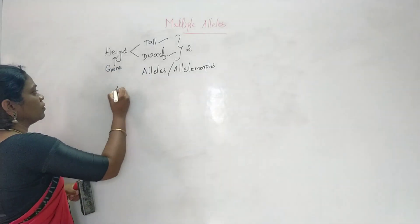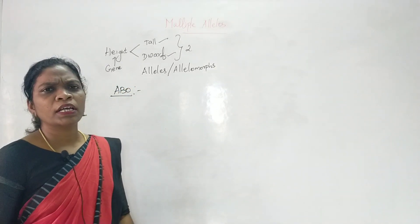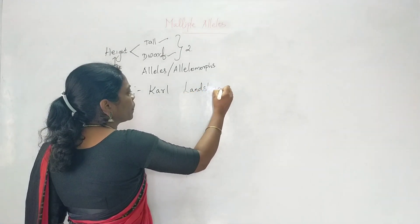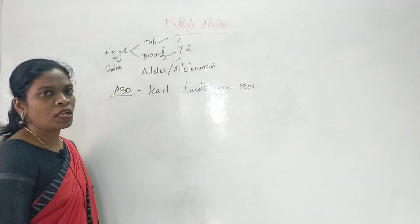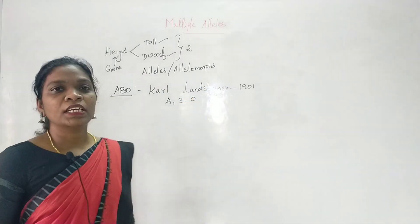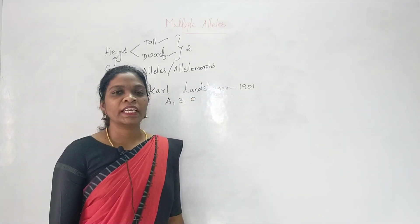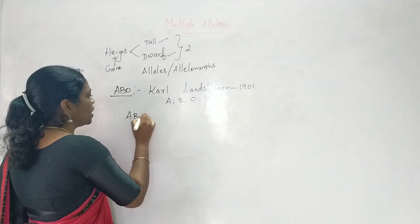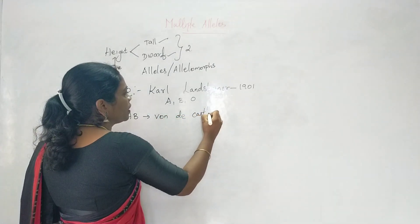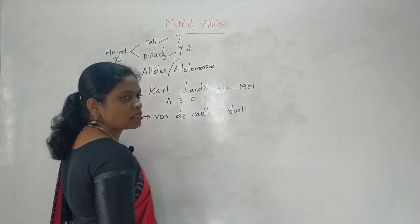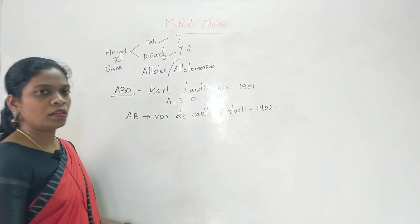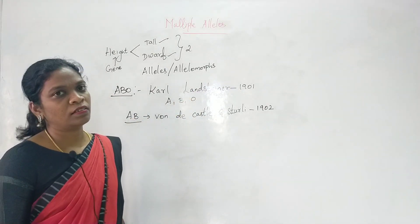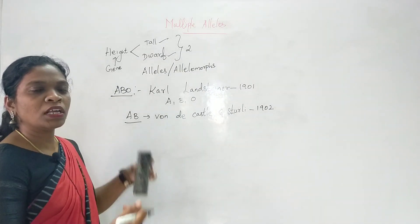The blood groups A, B, and O were discovered by Karl Landsteiner during the year 1901, which is why Karl Landsteiner is also known as the father of blood grouping. One more blood group, AB, was identified by Vandy Casely and Sturley during the year 1902. They were students of Karl Landsteiner, and it is because of their contribution that we learn about all four different types of blood group.